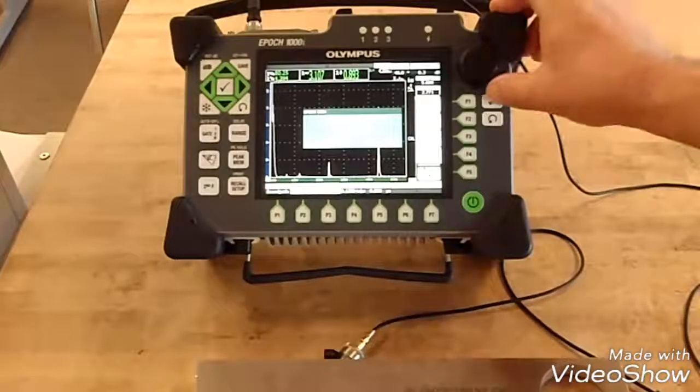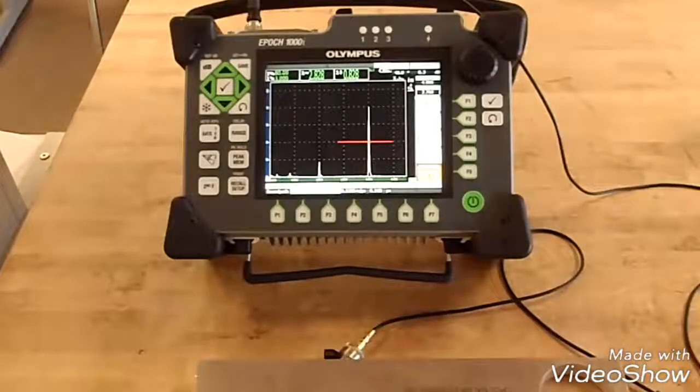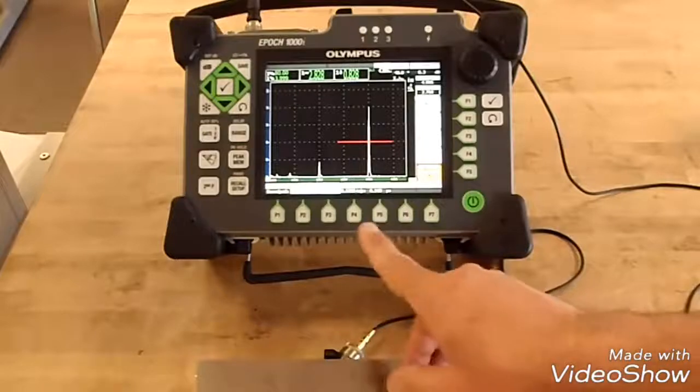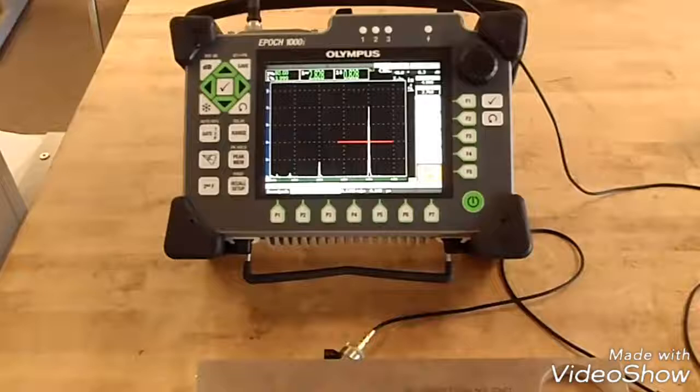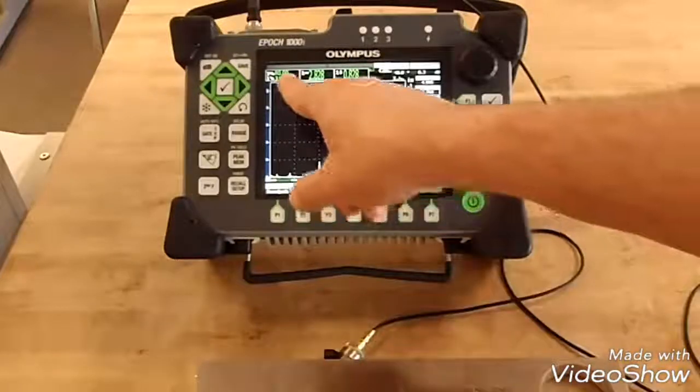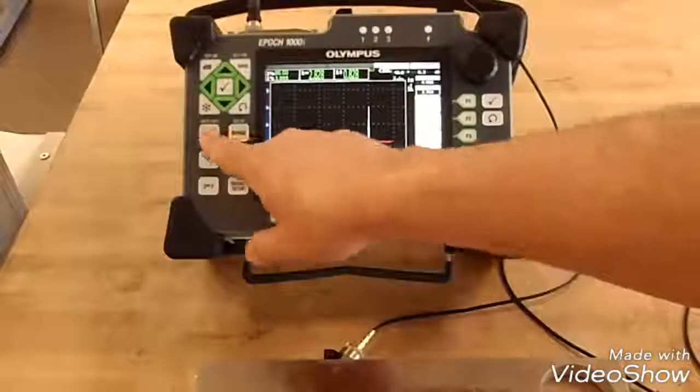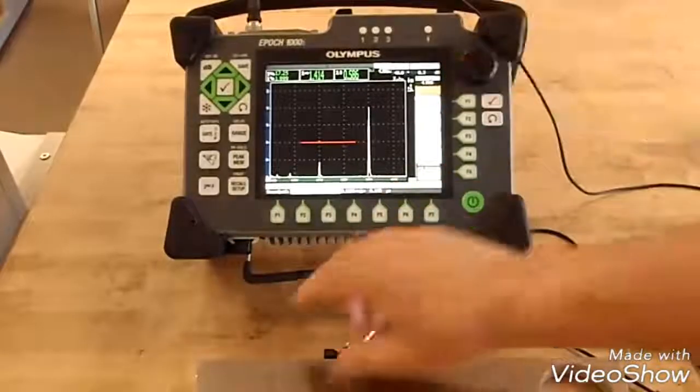There it is. Calculate. Now you've calibrated it. It will automatically change your zero and your velocity to come up with the correct reading. In this case we're reading four inches on the four inch radius and two inch sound path to the two inch radius.